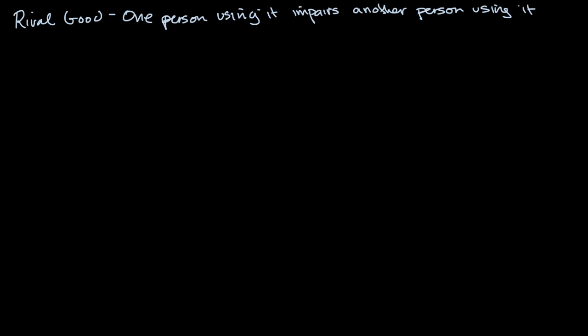Now, another related idea is that of excludability. And as we'll see, sometimes these things go together, but sometimes they aren't. So excludable means that you could stop someone from using it. You can exclude them.